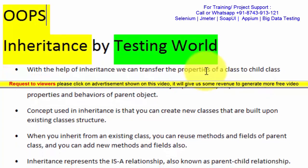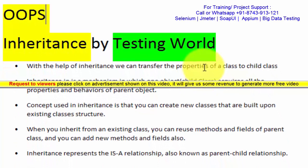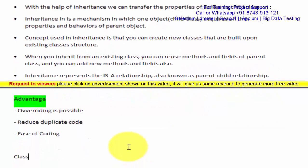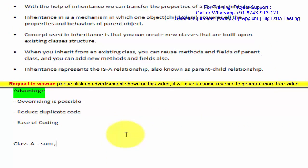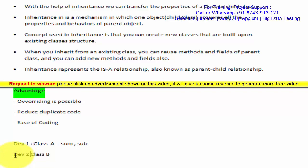Before moving to the inheritance concept, first I'll show how we can write code without inheritance. The requirement is to have a class A with two methods — sum and subtract — and we are working in a team. Person A is creating class A with these two methods, and person B wants three methods: sum, subtract, and multiply. So person B needs to create class B with those three methods.